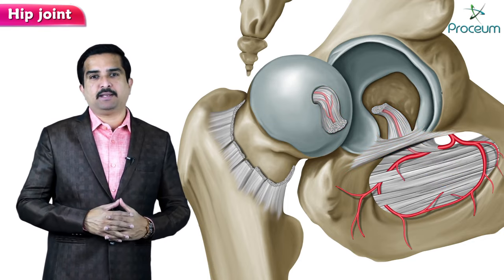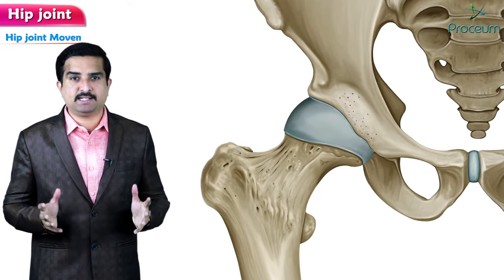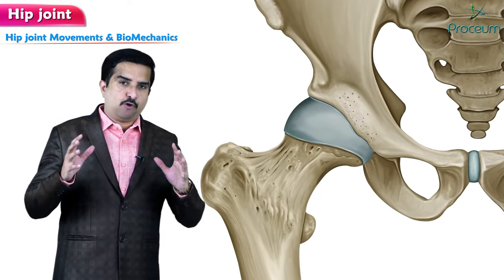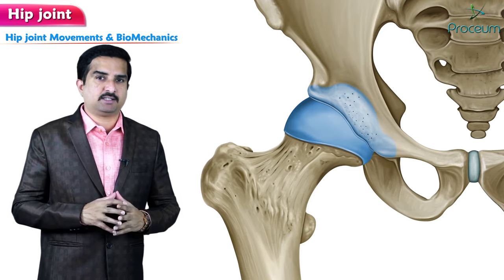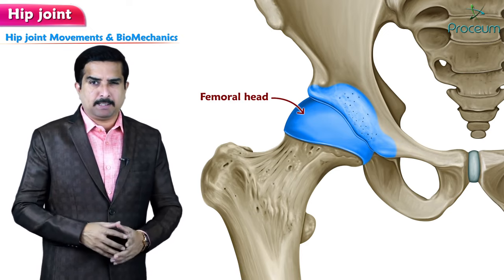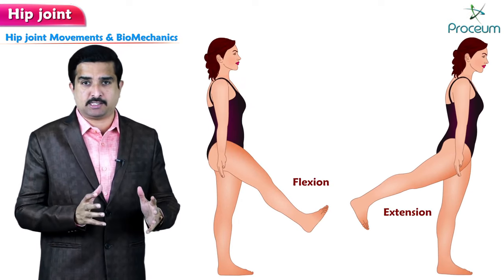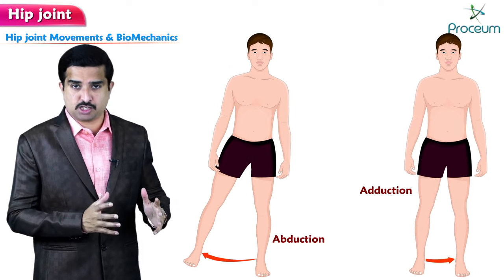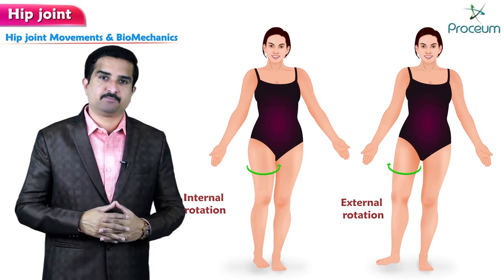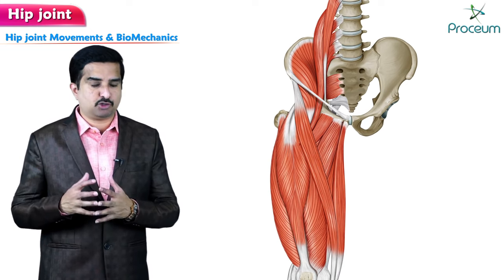After discussing the ligaments, it is important to know about hip joint movements and biomechanics. A key point is that no muscles attach directly to the femoral head, but many muscles cross the hip joint and allow flexion, extension, abduction, adduction, internal rotation, and external rotation of the thigh. Let us now focus on the muscles involved and the movements of the hip joint.